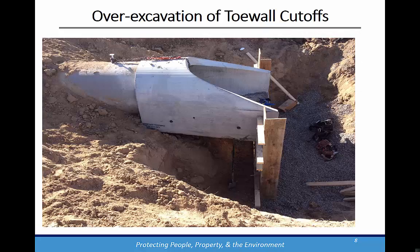Let's talk about toe walls and cutoff walls now. Typically, cutoff walls are simply a cutoff trench excavated that extends three feet below the downstream end of the flared end section. Typically, only the upper section along the sides of the flared end section are formed. Forms may be required when soils or site conditions do not permit trenching. One key point is to ensure that the outfall or flared end section is not over excavated due to the problems encountered when trying to achieve compaction with backfill.